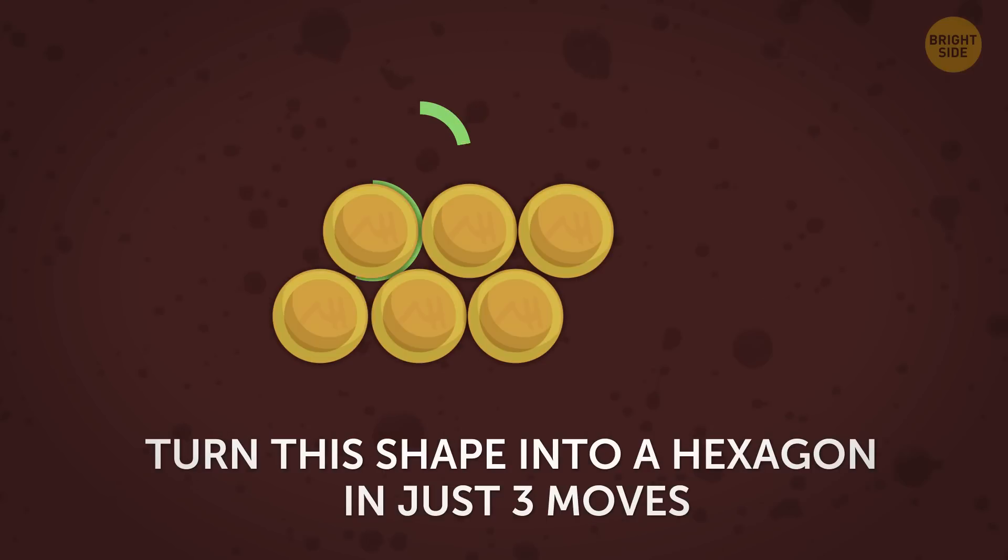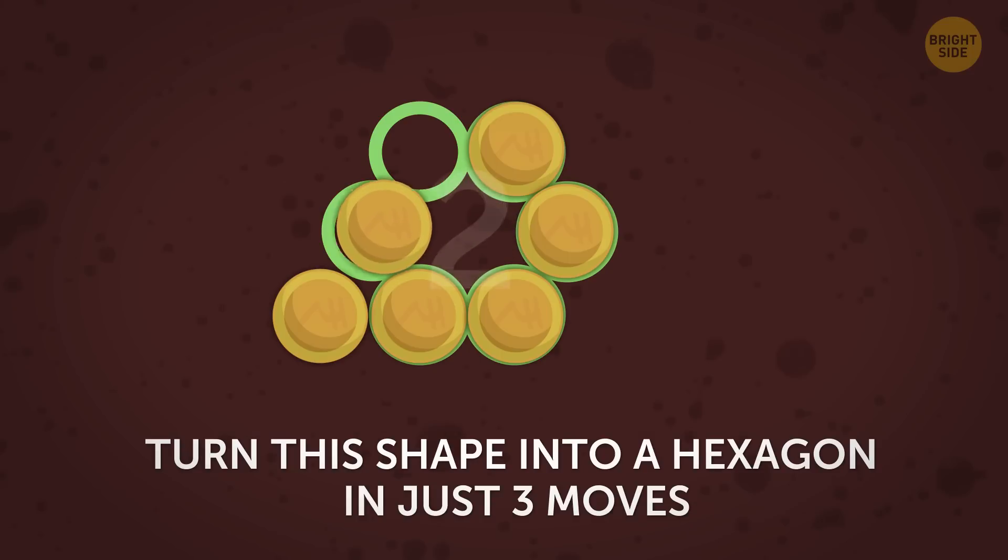Well? Have you cracked it? Here's the right answer. Move 1, 2, and 3. Voila! Our perfect hexagon is ready. You can also use this riddle in reverse to challenge your friends.